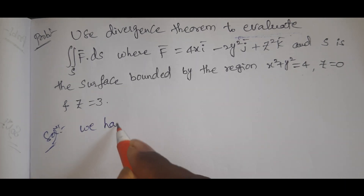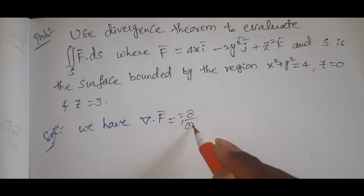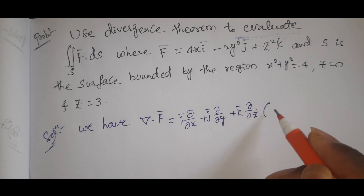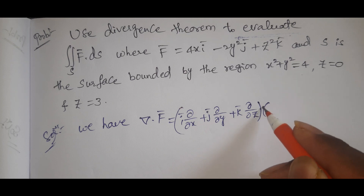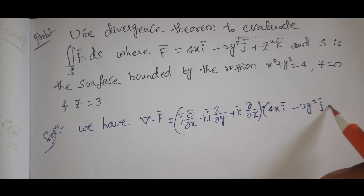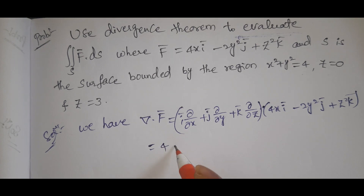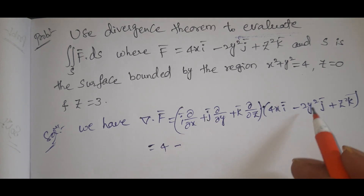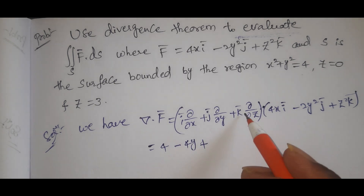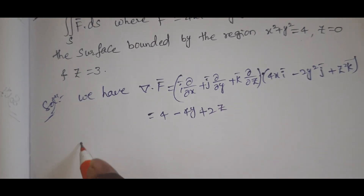We have ∇ · F̄ = (∂/∂x)(4x) + (∂/∂y)(−2y²) + (∂/∂z)(z²), which equals 4 − 4y + 2z.